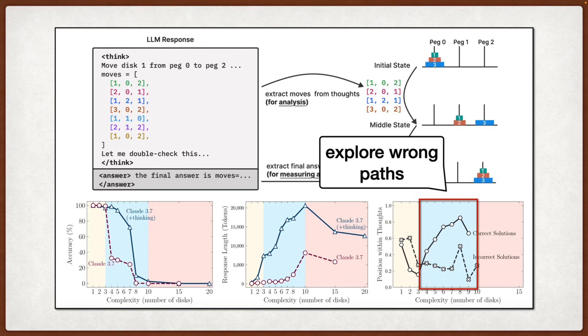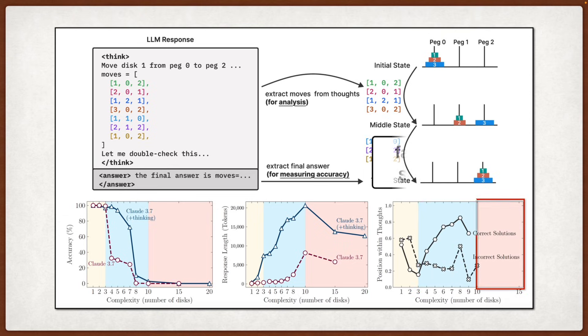For medium-complexity problems, they typically explore many incorrect solutions before finding correct ones later in the thinking process, which shows that the self-reflection mechanism can work but requires extensive exploration. And for high-complexity problems, they just fail to find any correct solutions at all, often getting stuck in loops or making the same types of errors repeatedly.